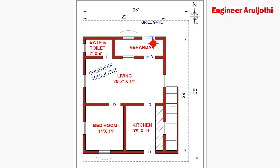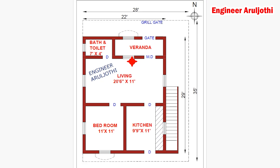What is the size of this gate? 4 feet by 7 feet. This gate is a steel gate. This area is a portico. This is a window, and this is a glass window. This is the main door.